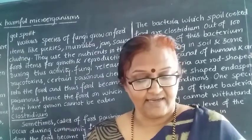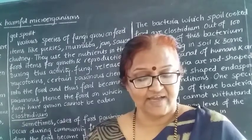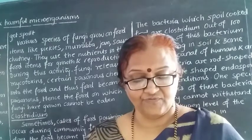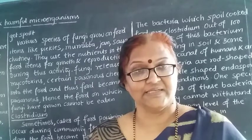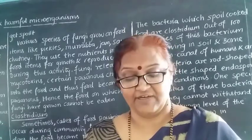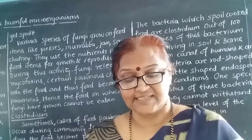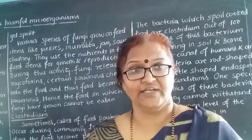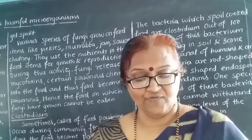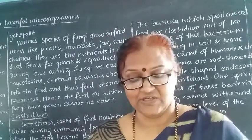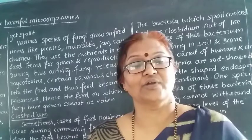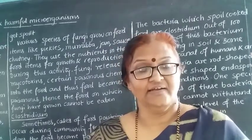Next is bird flu, which is H7N9, and swine flu, which is H1N1. These are caused by a virus through contact with infected birds and animals. Preventive measures include maintaining personal hygiene and eating properly cooked meat. Next is dengue — pathogen is virus, mode of infection is mosquito bite. Prevention includes cleanliness of surroundings, preventing stagnation of water, and mosquito control.